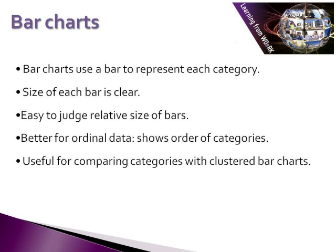Bar charts work really particularly well for ordinal data, because you can arrange your bars in order of the categories, i.e. from good to bad or from strongly agree to strongly disagree, and it gives you an idea of the flow of your data. As with pie charts, there is of course a limit to how many categories you can reasonably represent on a bar chart. Too many bars and the actual visual display of the data becomes very lost. So if we have, say, 15 bars in a bar chart, it becomes very difficult to pick out which category has the most and what the flow of the data looks like.